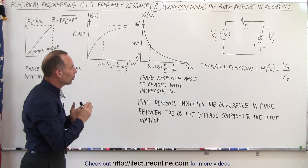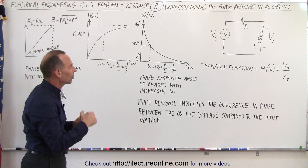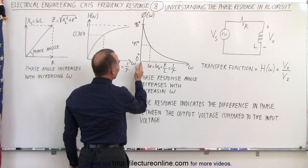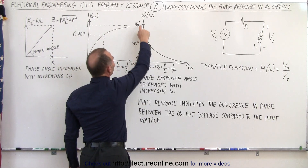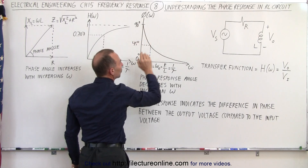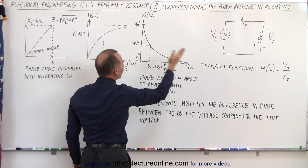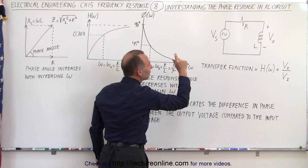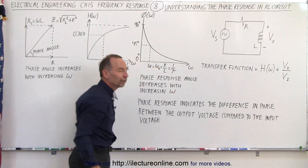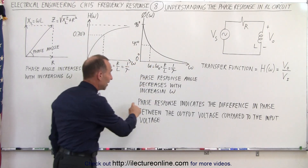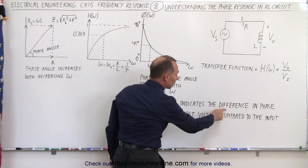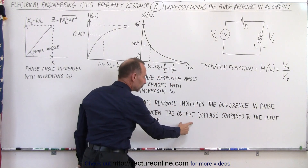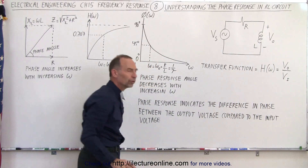When we take a look at the phase response angle, notice that at very low frequencies down to zero, we have a 90 degree phase difference between the output voltage and the input voltage. When the frequency goes really high, we have virtually no phase difference between them. The phase response indicates the difference in phase between the output voltage compared to the input voltage.